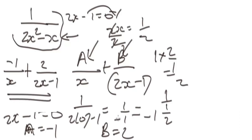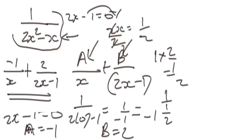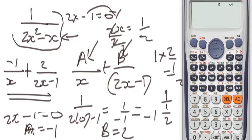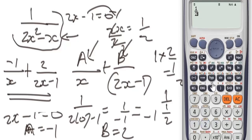Now let's verify this with the calculator. First, clear the calculator by pressing Shift, then set it to default mode. I recommend storing the number three as x — I've worked with this value for a long time and haven't found any errors with it. Press Shift, store, then set x to three. Now let's simplify the original fraction one over two x squared minus x using this stored value.